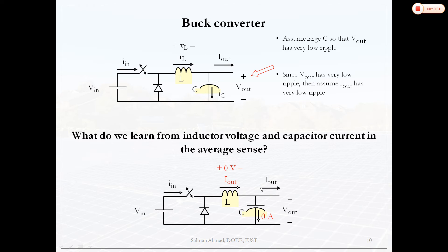In every case, the average voltage across the inductor is zero and the average current through the capacitor is zero. To have low ripple voltage we can use a high value capacitor, and to reduce ripple current we can use a high value inductor.